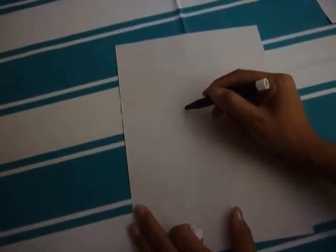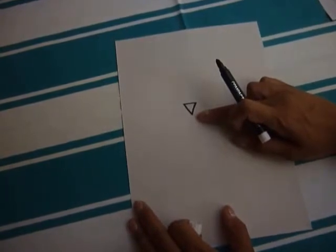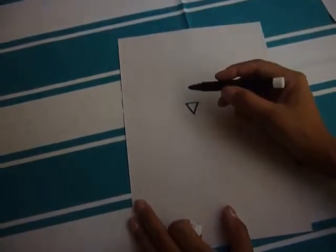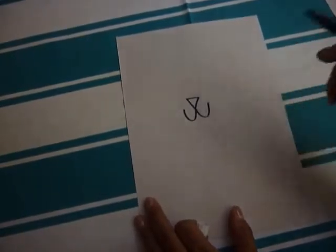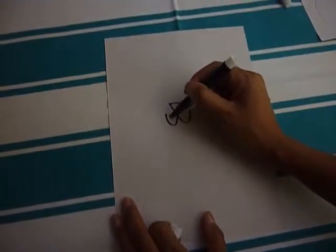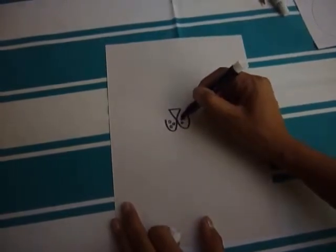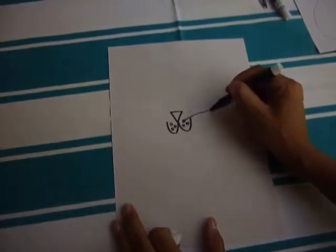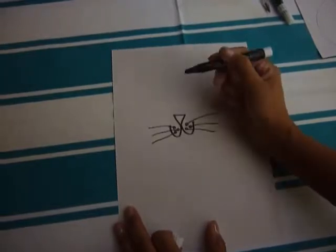Now we're going to draw a lion. The lion has a small nose. Then you will draw three circles here and three circles here for the whiskers. The lion has whiskers.